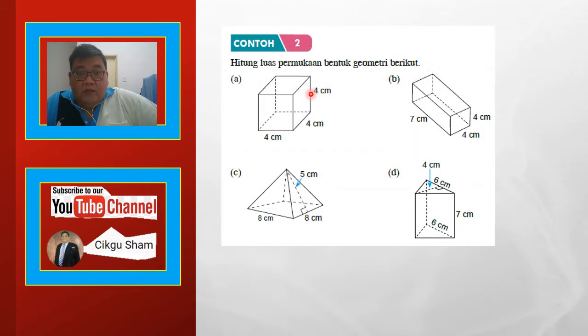Contoh 2: Hitung luas permukaan bentuk geometri berikut — A, B, C, D. Macam mana nak kira?